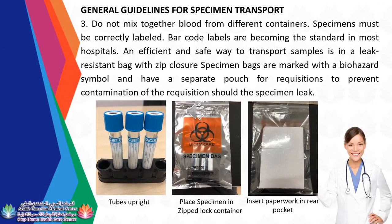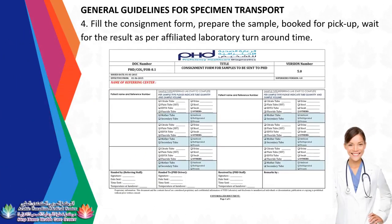Do not mix together blood from different containers. Specimens must be correctly labeled; barcode labels are becoming standard in most hospitals. An efficient and safe way to transport samples is in a leak-resistant zip-closure bag marked with a biohazard symbol, with a separate pouch for requisitions to prevent contamination. Place tubes upright in the zipped lock container and insert paperwork in the rear pocket. Fill the consignment form, prepare the sample, book for pickup, and wait for the result as per the affiliated laboratory's turnaround time.